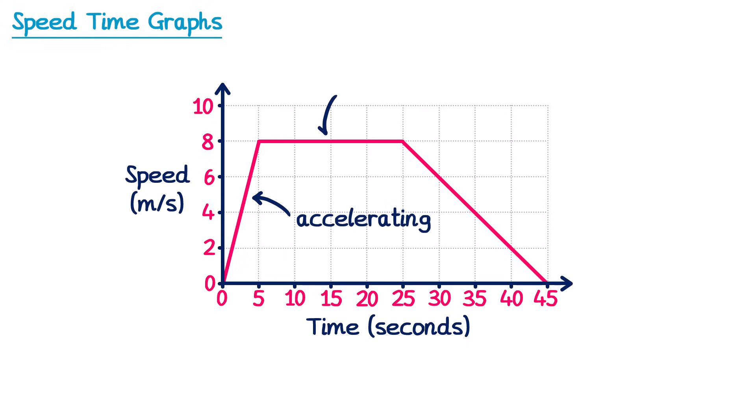In the second section of the race their speed didn't change — it remained at 8 m/s, so we could say they had a constant speed. Since acceleration requires a change in speed, if the speed is constant there'll be no acceleration. So in this section of the race they were not accelerating.